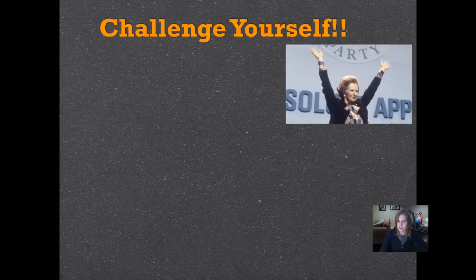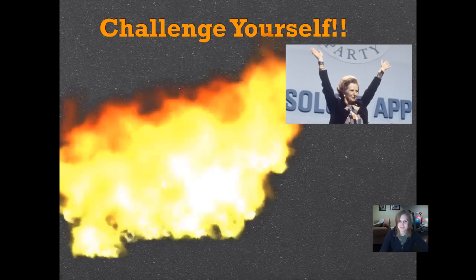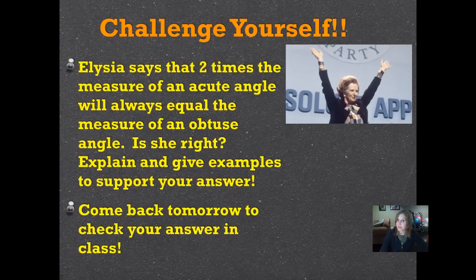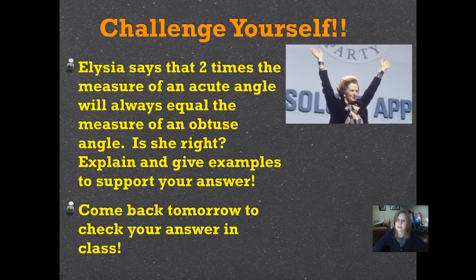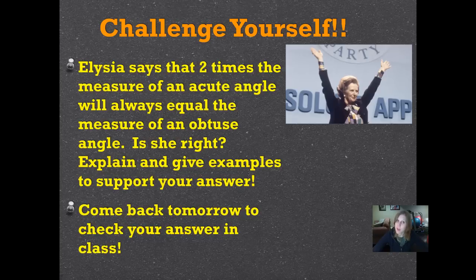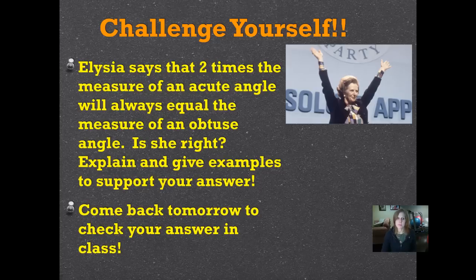It's time to challenge yourself. I've been really proud of those of you who've been challenging yourself this year. Alicia says that two times the measure of an acute angle will always equal the measure of an obtuse angle. Is she right? Explain and give examples, really specific examples. Don't just kind of throw some words out there. Give me some concrete examples to support your answer. You can draw pictures to do that, too. Come back tomorrow to check your answer in class.